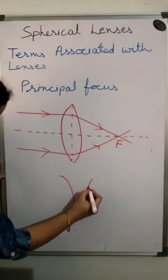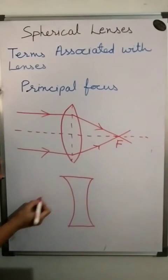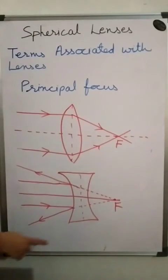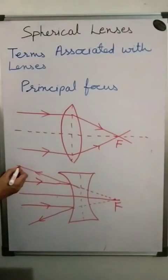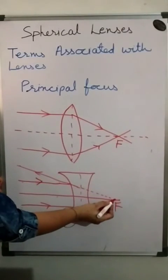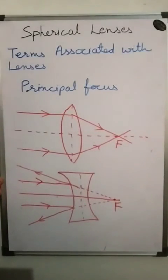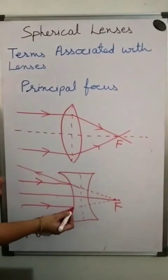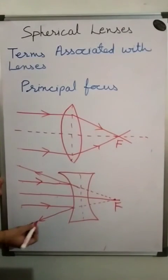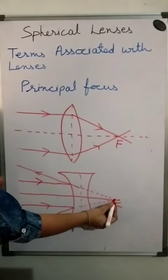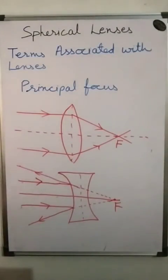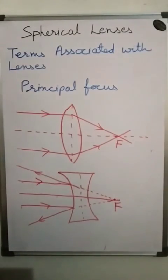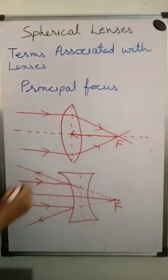For a concave lens, rays coming parallel to the principal axis diverge. If we extend these diverging lines, they appear to meet at a point behind the lens — this point is called the focus. Similarly, rays from the other side also appear to come from that focus point.